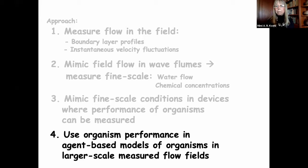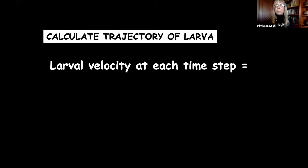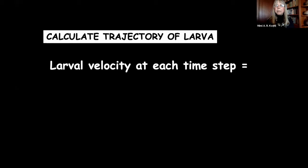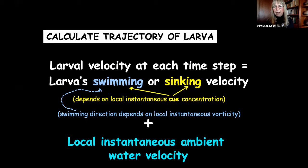So these larvae are simple on-off machines triggered to sink when they encounter odor cue. We use this organism behavior in agent-based models of these organisms in larger-scale measured flow fields. We calculate the trajectory of a larva where the larval velocity at each time step equals its swimming or sinking velocity — decided by measuring the brightness of the pixel in which the larva sits in our flow data. Its swimming direction depends on the local instantaneous vorticity of the previous time step, which has aimed it in the direction it's going.